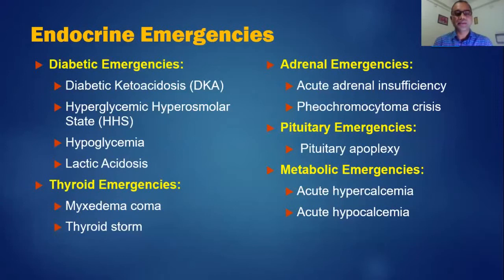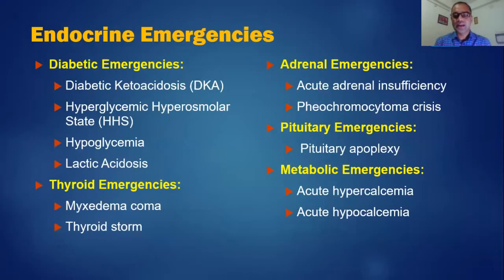The diabetic emergencies are the most common endocrine emergencies, which consist of diabetic ketoacidosis (DKA), hyperglycemic hyperosmolar state (HHS), hypoglycemia, and the very uncommon lactic acidosis. Thyroid-related emergencies include myxedema coma and thyroid storm. Adrenal emergencies include acute adrenal insufficiency and pheochromocytoma crisis. Pituitary emergencies include pituitary apoplexy and other metabolic emergencies associated with excess or deficiency of hormones.